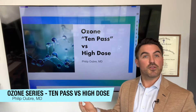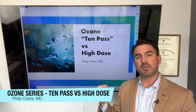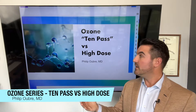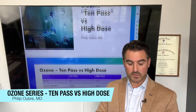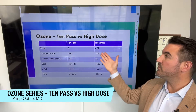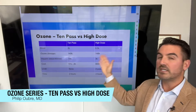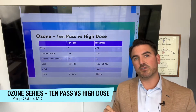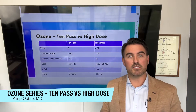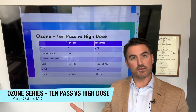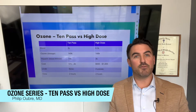There's another option called high-dose ozone, which is basically the same thing as 10-pass, but it has certain benefits and it's a little easier to do — which is why we're doing it in our office. To understand the comparison, you first need to understand what 10-pass means. The reason it's called 10-pass is that you actually get 10 different passes of your blood.